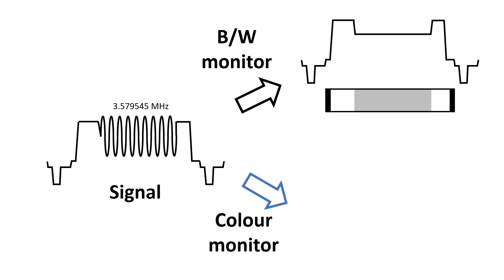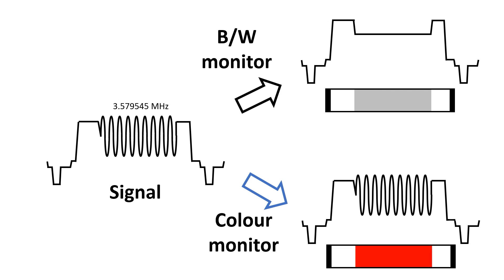When we present the same signal to a color TV though, it does see this 3.579545MHz signal. And let's say in this case, it interprets it as red, and displays red in this region of the scan line.